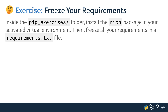Inside the pip_exercises folder, install the rich package — that's R-I-C-H — in your activated virtual environment. Then freeze all your requirements in a requirements.txt file. The important part is that you install the rich package into an activated virtual environment, because if you don't activate it first, you will install it into your system's Python site-packages instead. Make sure to activate it first, then go ahead and solve this exercise on your own.